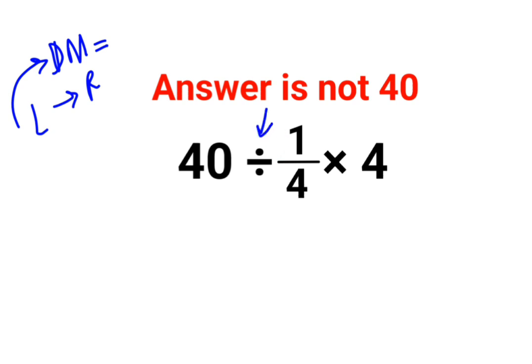So we have 40 divided by 1 upon 4. Now when you have division you will always follow the rule of KCF where K stands for keeping the first number as it is, C stands for changing the division sign to multiplication, F stands for flipping. Taking 1 upon 4, flipping to 4, and then we have multiplied by 4. So the answer for this question is supposed to be 640.